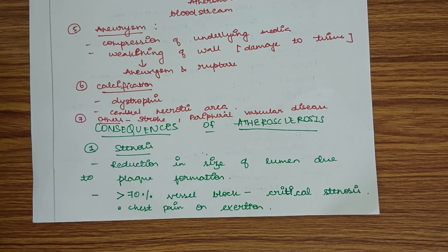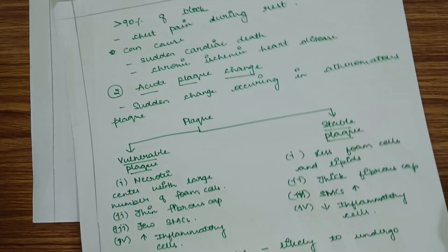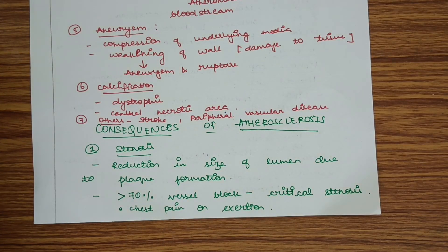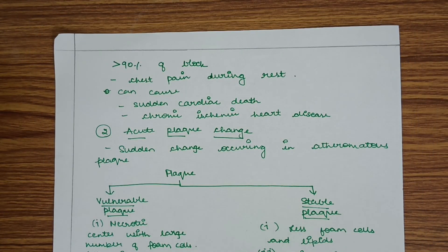The consequences of atherosclerosis include stenosis of the vessel — narrowing — or acute plaque change. In stenosis, the lumen size is reduced. If reduced more than 70%, it is known as critical stenosis, causing chest pain on exertion. If more than 90% blocked, it causes chest pain at rest, and can lead to sudden cardiac death or chronic ischemic heart disease.